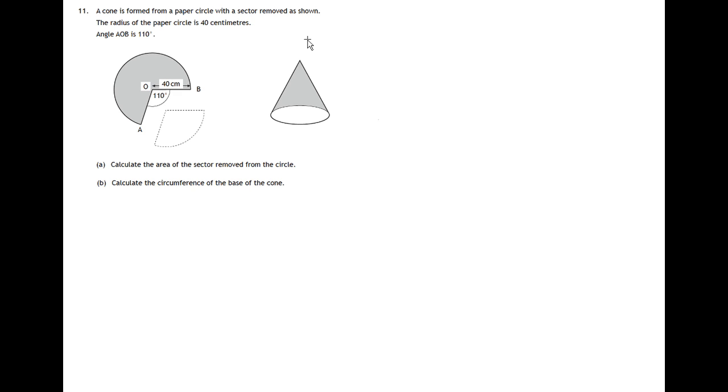This is question 11 paper 2 from the SQA specimen paper for National 5 mathematics. We've got a piece of paper from which a sector has been removed and this is folded up to form a cone.